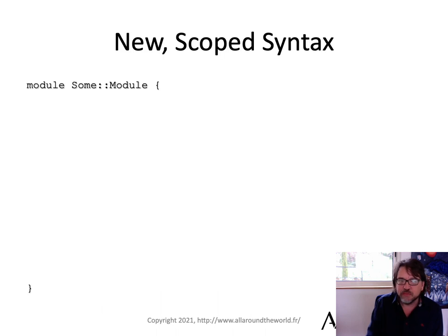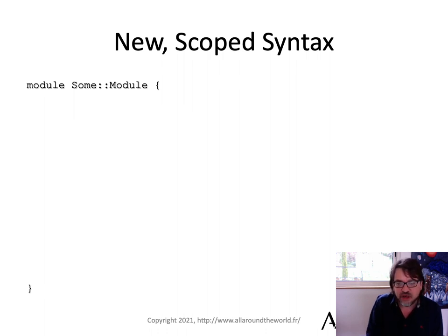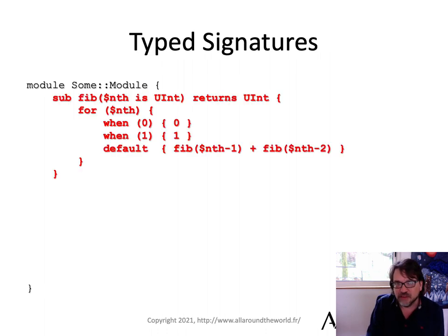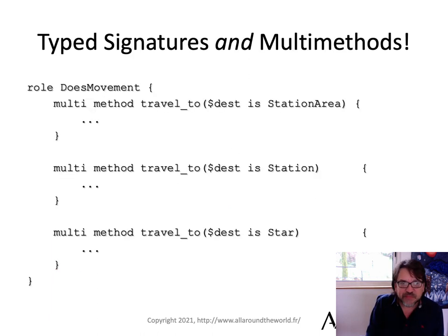We don't have to stop there, because Cor introduces a new syntax. What if we also have modules — 'module SomeModule' instead of 'class SomeModule'? Inside of that, everything has a new modern syntax, such as automatically having strict and warnings enabled. We can have typed signatures, multi subs — which solve all sorts of problems and make your code very clean. We can get the best of both worlds with typed signatures and multi methods.